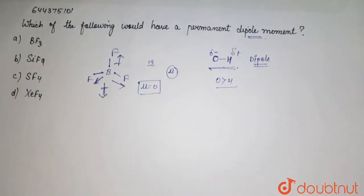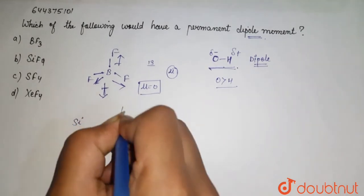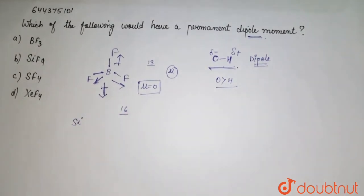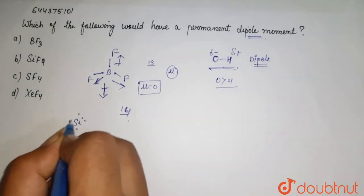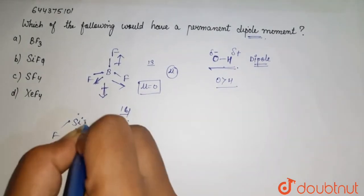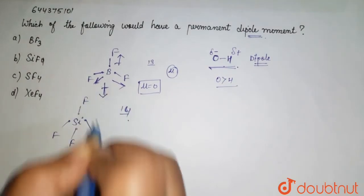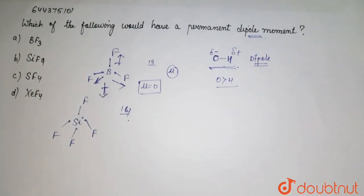Then we have SiF4. Silicon belongs to group 14, the carbon family, so it has four valence electrons. Here is one, two, three, and four. Fluorine is the most electronegative in the periodic table, so again it is more electronegative than silicon.